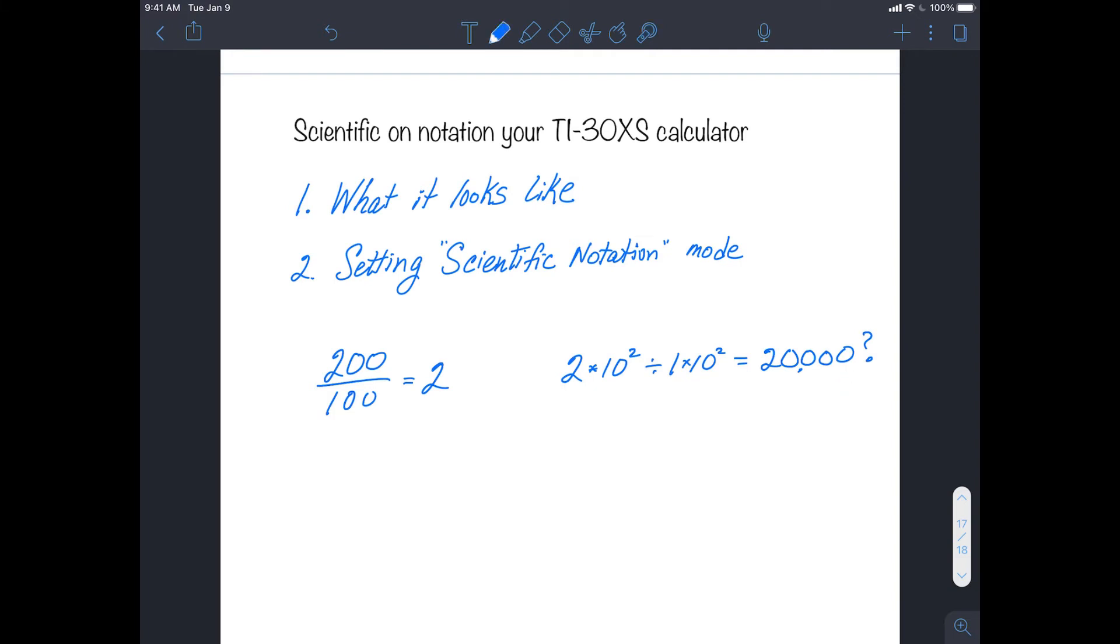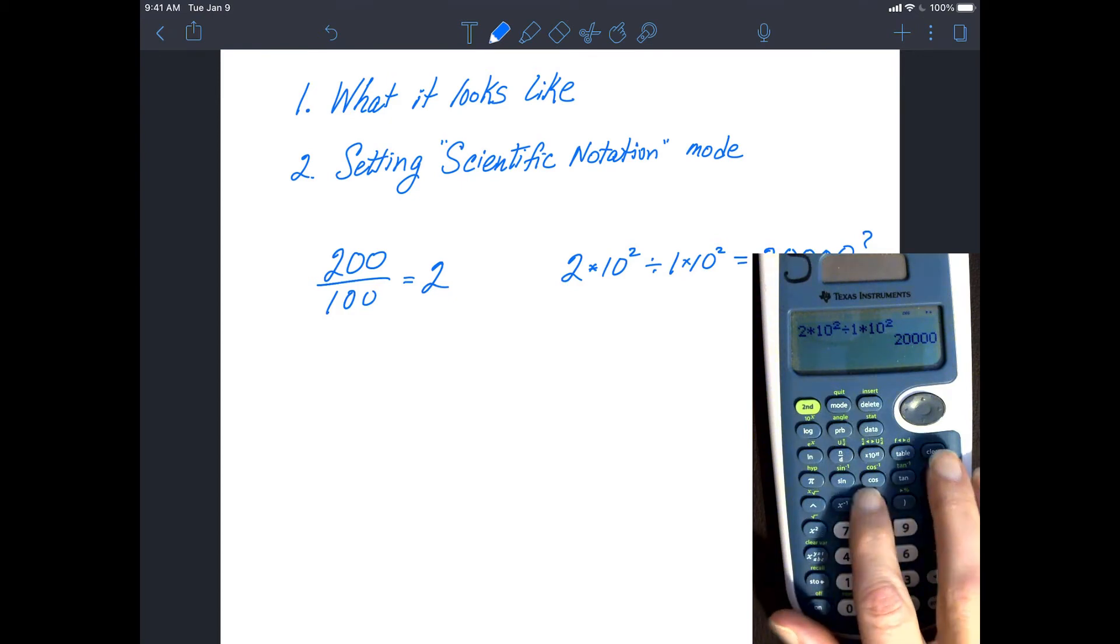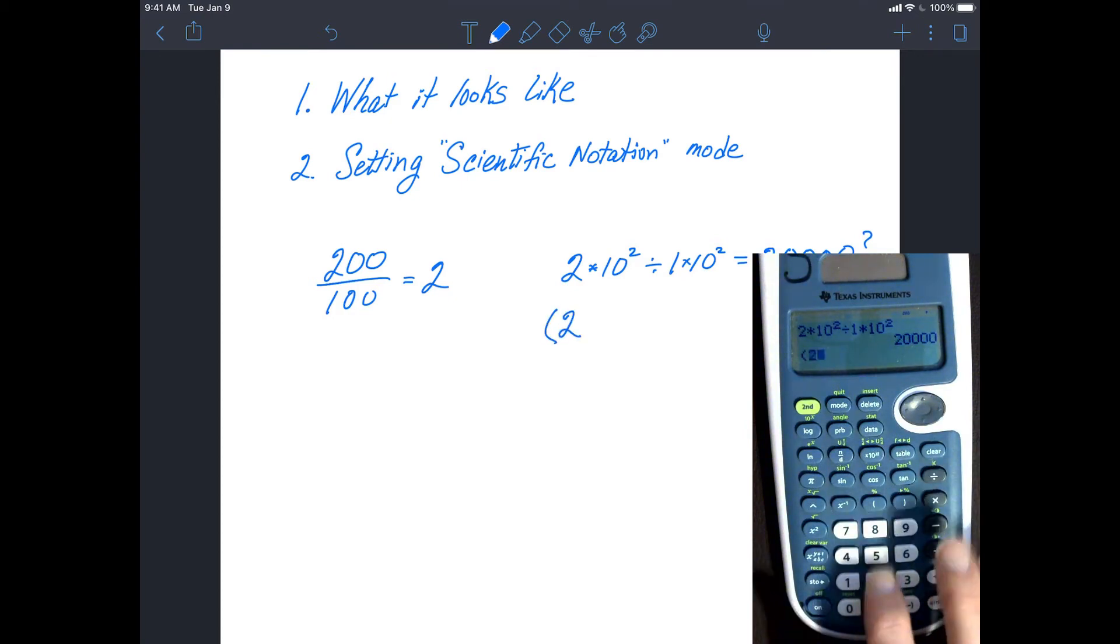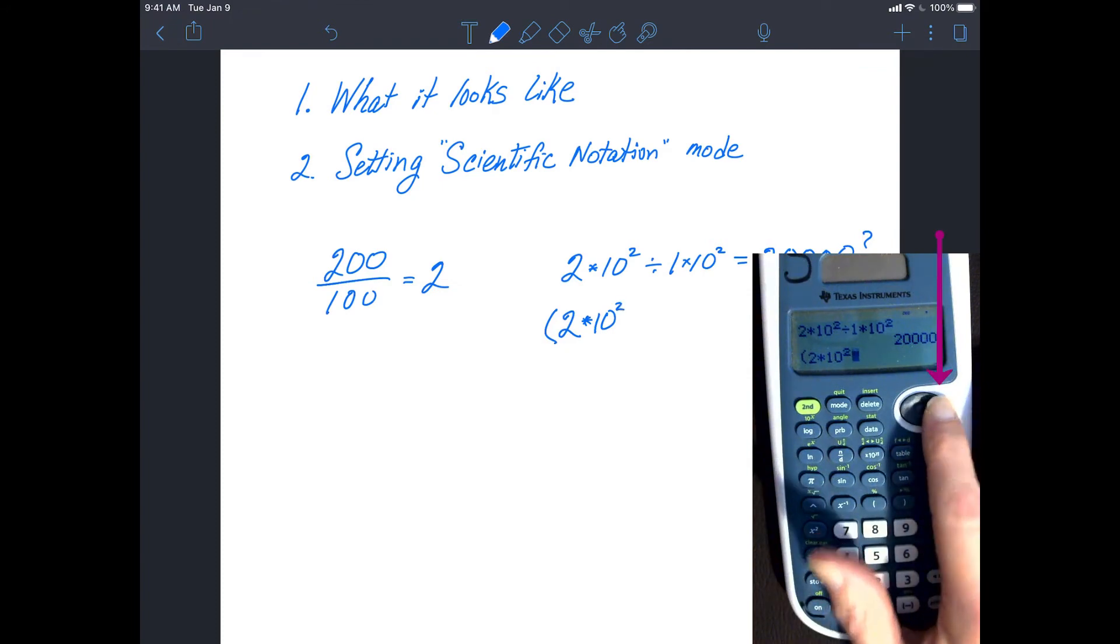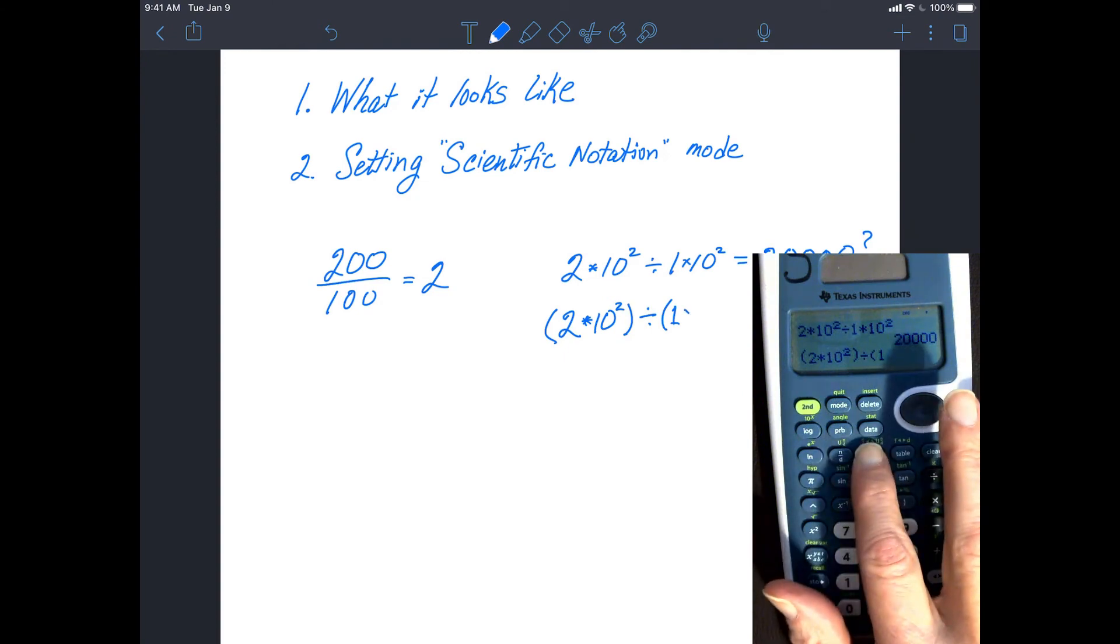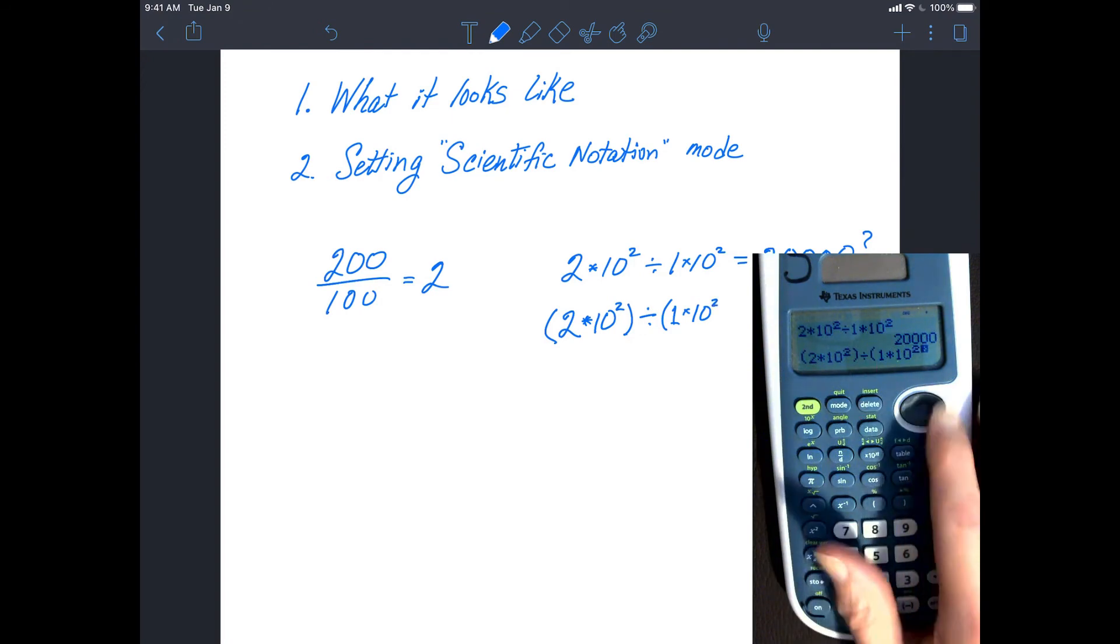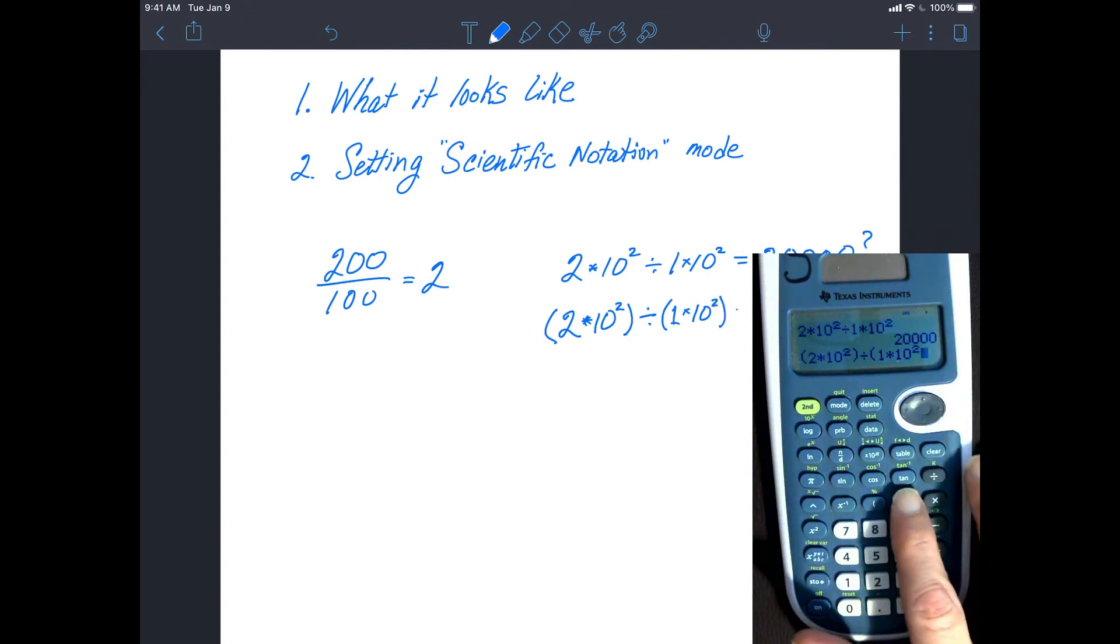So the way to prevent that is to do it this way. Each scientific notation number has to be enclosed in parentheses. On the calculator, we would type open parentheses 2, and then we'd hit that little button that says times 10 to the n, and we're going to put in a 2. Then we need to press the right arrow and close the parentheses, divided by open parentheses 1, and then we'll hit that times 10 to the n button, and we'll put in a 2 again, hit the right arrow, close the parentheses, and then press Enter, and we get the desired answer of 2.